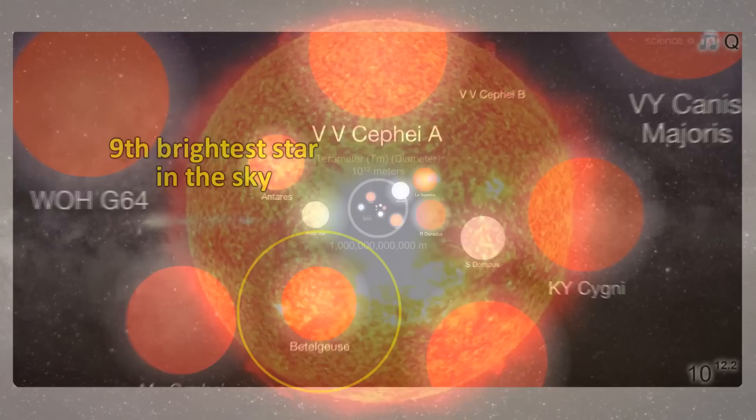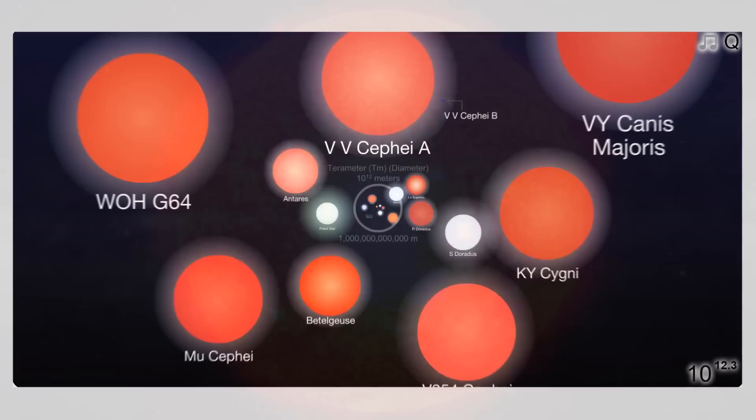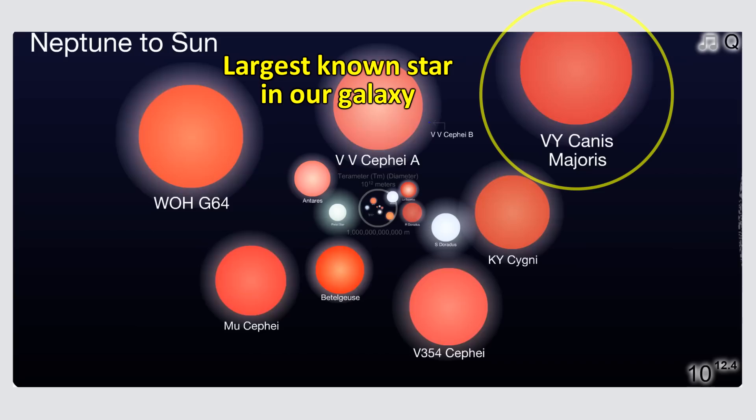One of the brightest stars in the sky is also the largest known star in the Milky Way galaxy, VY Canis Majoris, at about 2 billion kilometers in diameter.